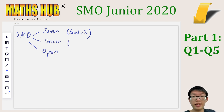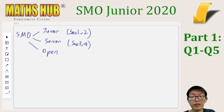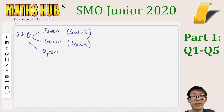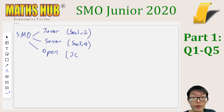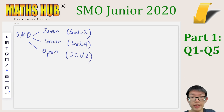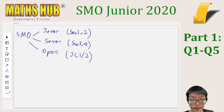The senior section would be Sec 3 and 4, which is 9th and 10th grade. The open section is open to everybody, but mostly for junior college students, which would be either 11th or 12th grade.